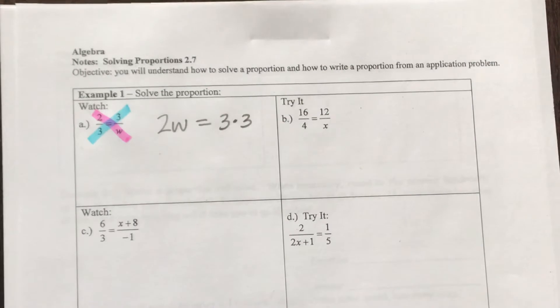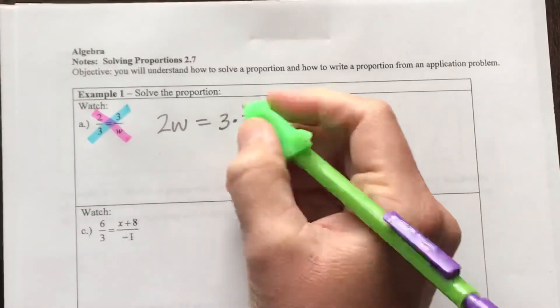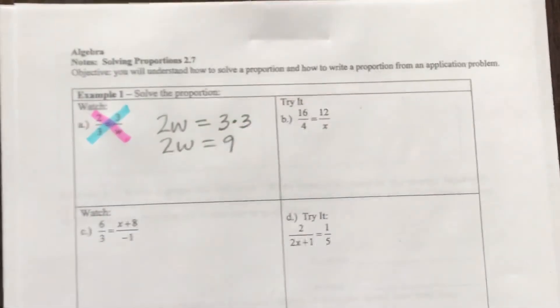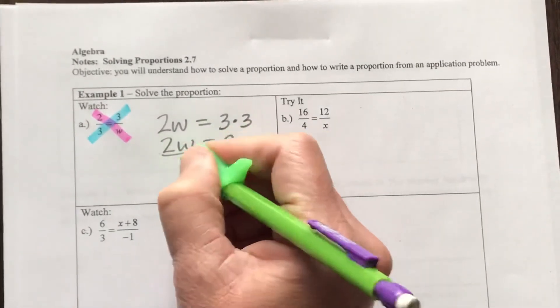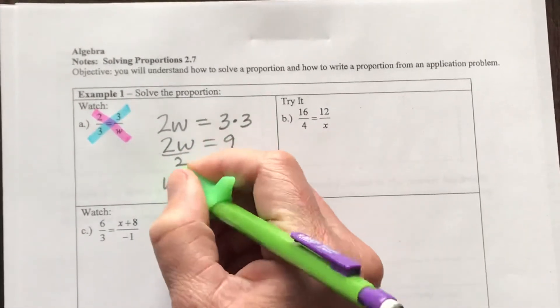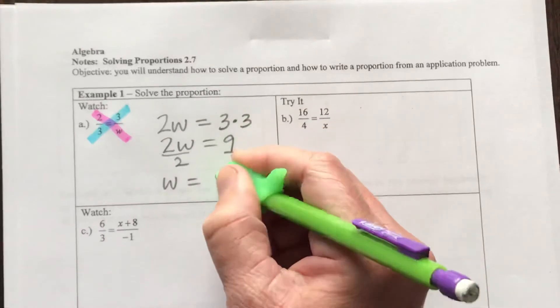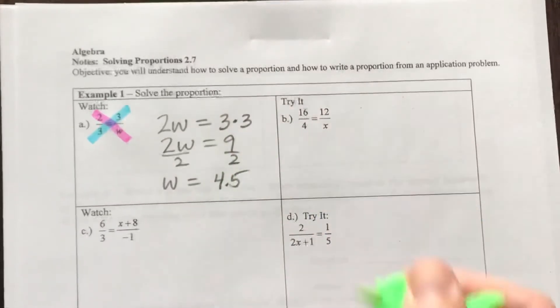So what I want to do is multiply the three times three, which would give us nine. And if I divide both sides by two, I get W is equal to nine halves, which is the same as 4.5.